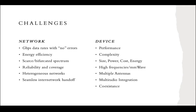The third network challenge is scarce or bifurcated spectrum. Most wireless communications are delivered through a spectrum, and each technology has its own specific spectrum — for example, 5G works in the 3.3 to 3.8 GHz range. In the near future, telecommunication devices will need more spectrum, so its usage needs to be carefully managed.